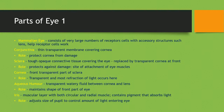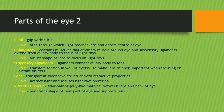The aqueous humour is the transparent watery fluid between the cornea and the lens and its role is to maintain the shape of the front part of the eye. The iris is a muscular layer with both circular and radial muscle which contains a pigment that absorbs light. Its role is to adjust the size of the pupil to control the amount of light that enters the eye. The pupil is a gap within the iris through which light reaches the lens and the interior of the eye.